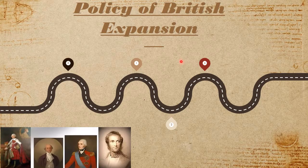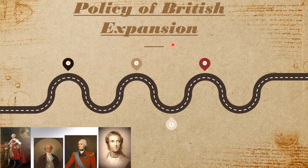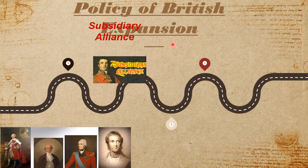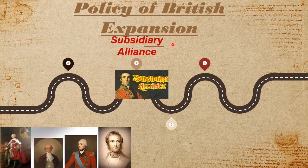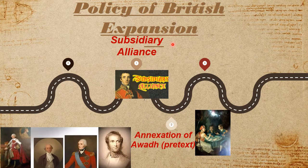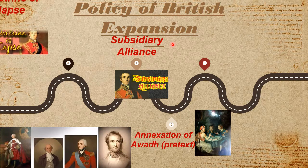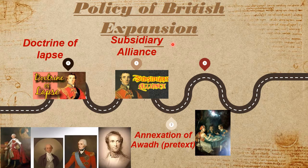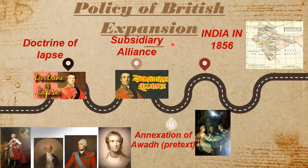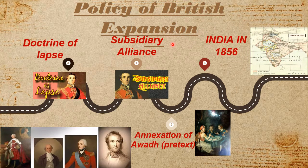Now we are going to discuss the policy of British expansion. The East India Company avoided wars with local monarchs as it was an expensive option. Instead, they devised various ways to take over each kingdom: peaceful annexation based on the system of subsidiary alliances; assuming control of the state by either declaring maladministration or employing the Doctrine of Lapse; and finally, military conquest when all other means seemed unfeasible.